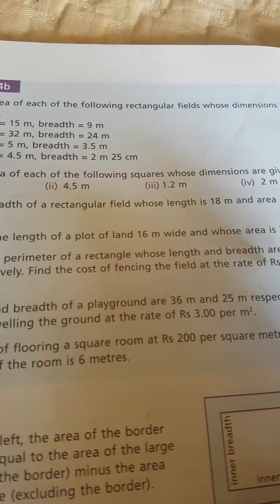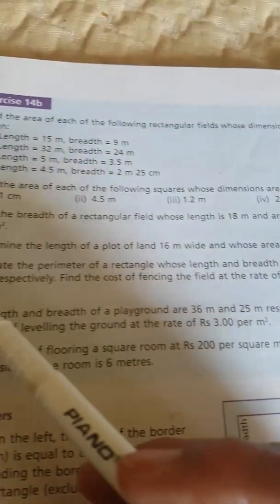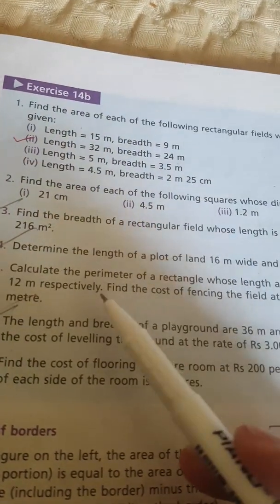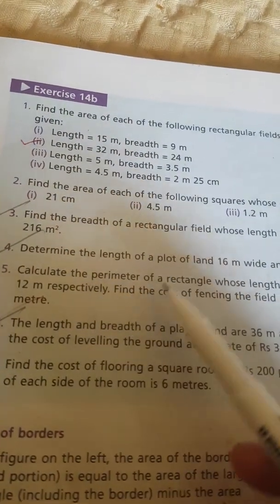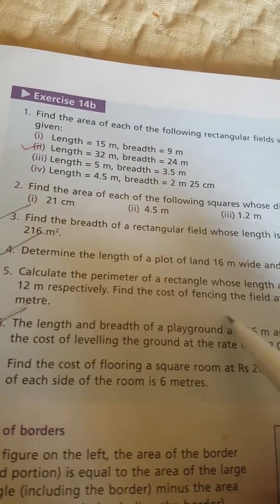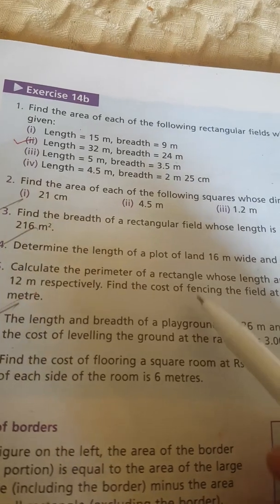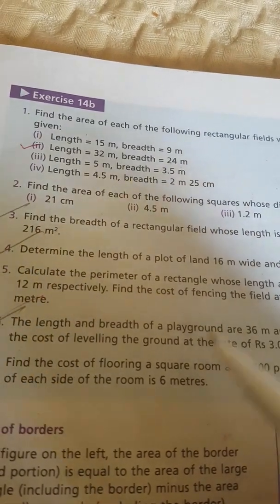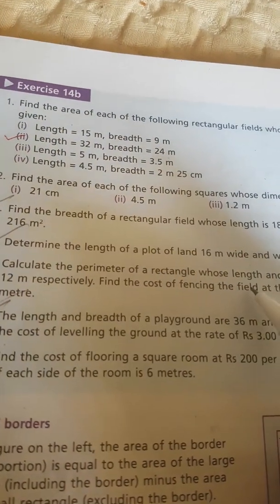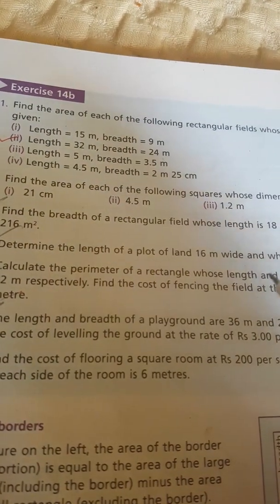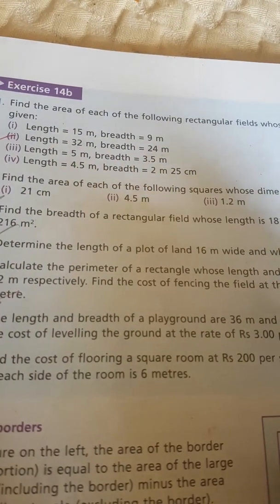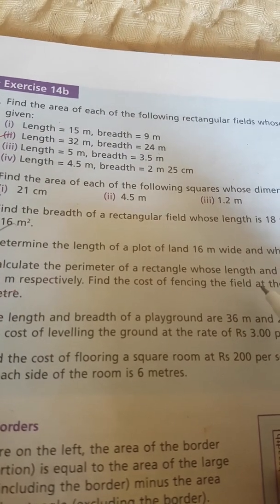You also have to find out the cost of fencing the field at the rate of rupees 25 per meter. So you have to find the perimeter, not the area. The perimeter is the boundary of the field — the whole boundary gives you the perimeter. Since length and breadth are different, you use the formula: 2 multiplied by length plus breadth.